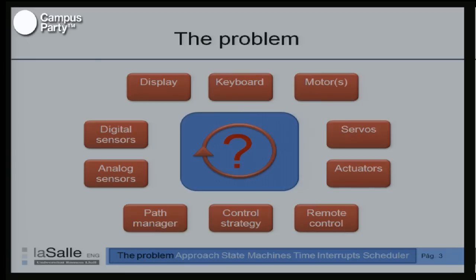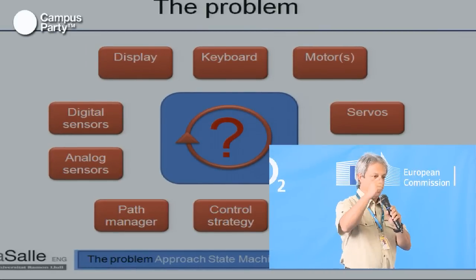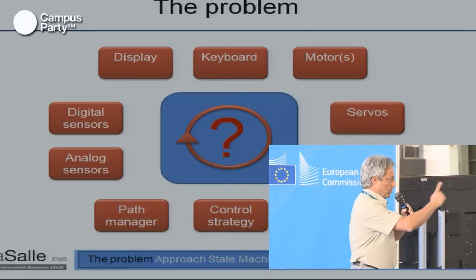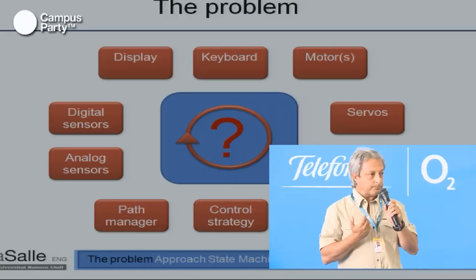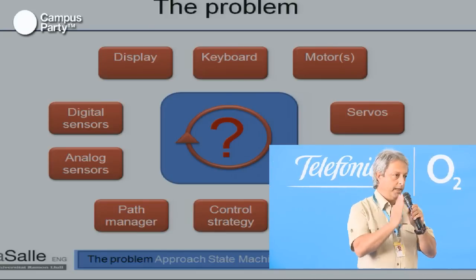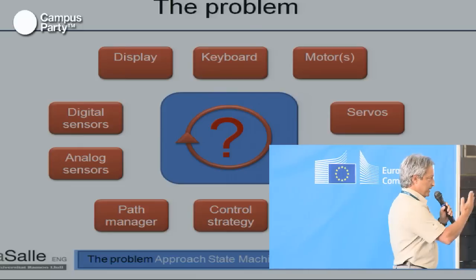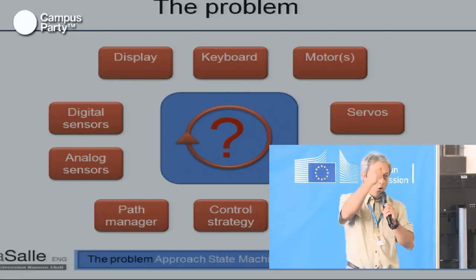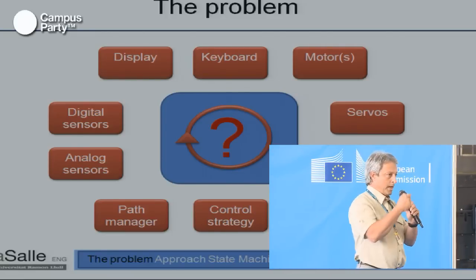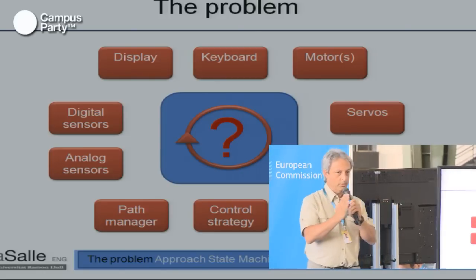For example, it interrupts the display thread, saves the state, and changes to keyboard, lets it run for maybe five milliseconds, then interrupts and changes again — motors, servos, actuators. The idea is that the programmer thinks as if a dedicated microprocessor is assigned to every single task: one for the display, one for the keyboard, one for the motors. The programmer only thinks about the task at hand.